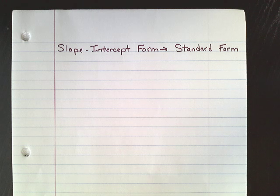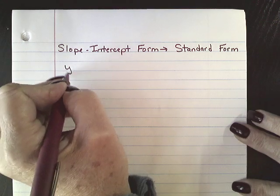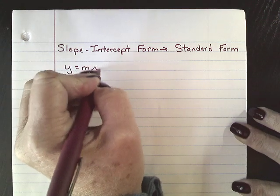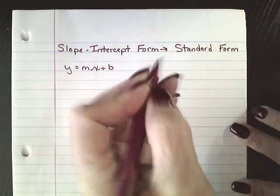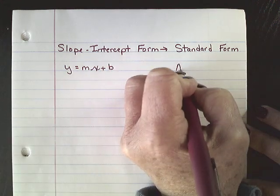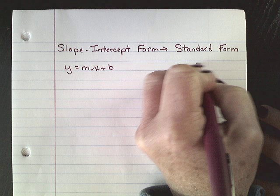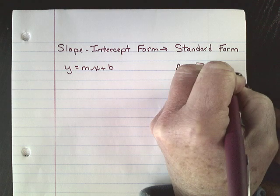All right, now we're going to go in the opposite direction. We're going to do slope-intercept form into standard form. So just a reminder, slope-intercept form is y equals mx plus b, and standard form is ax plus by equals c.